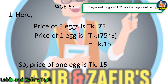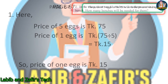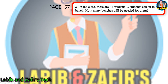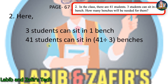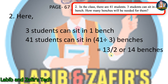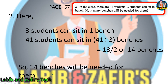This is our first word problem. Now we go to number two, from page 67: in a class there are 41 students, three students can sit in each bench — how many benches will be needed? Three students can sit in one bench, so 41 students need 41 divided by 3 benches, which is 13 with remainder 2. Since 2 students remain, we need one more bench, so 14 benches will be needed.